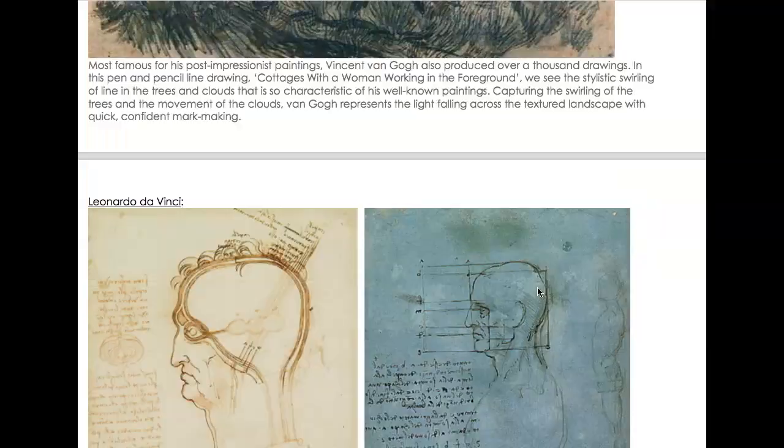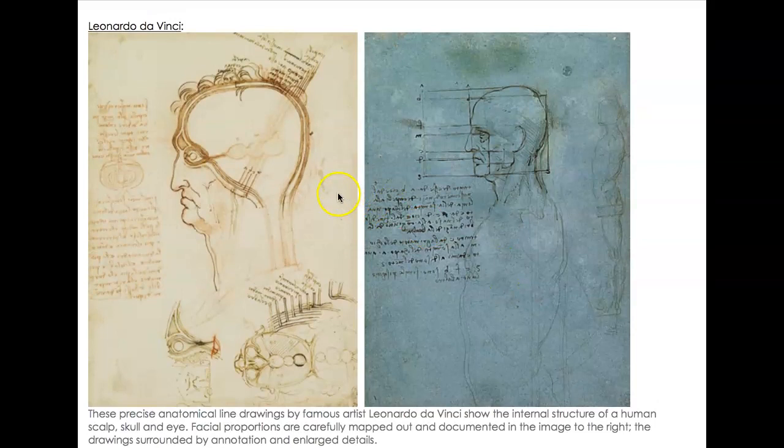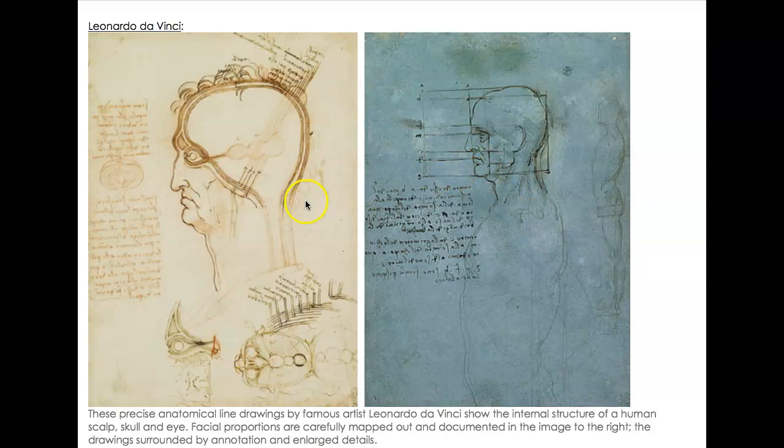Leonardo da Vinci — some pages from his journal where he's analyzing the human skull and the eye. Lots of parallel lines and hatch marks conveying different tones. You can also see how he's analyzing the proportions of the human head — very technical for its time. What I like is how he's annotating the page, just like we should be doing in our own journals.